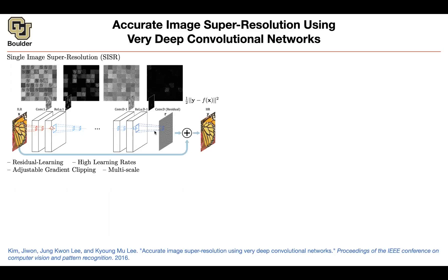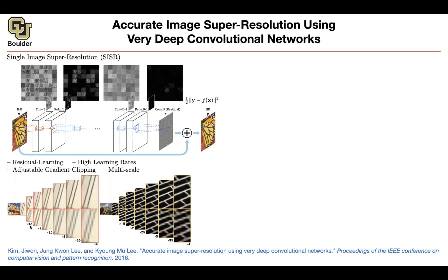There were some other papers before this one claiming that deeper neural networks are not helping super resolution. But then this paper came along and said: if you do it this way — if you learn the residuals — then it's going to actually help. This is the idea of multi-scale: it's the same network, so you're not training a different network for a scale of two. You are training your network to do all of these scales at the same time.